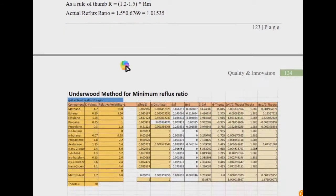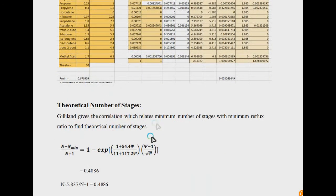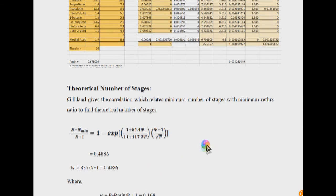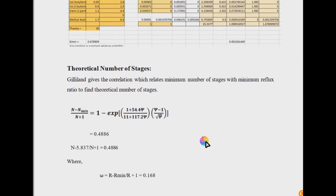After calculating the actual reflux ratio, you move to the theoretical number of stages calculation. In this shortcut method, you use the Gilliland correlation, which relates the minimum number of stages with the minimum reflux ratio to find the theoretical number of stages. This means you do not have to iterate to find the composition at every stage to determine where your distillate product is achieved. Literature notes that Lewis-Matheson is more accurate, but the shortcut method can also be used.